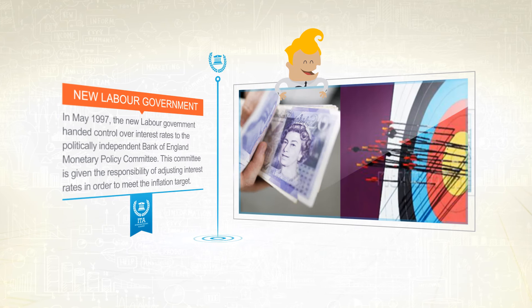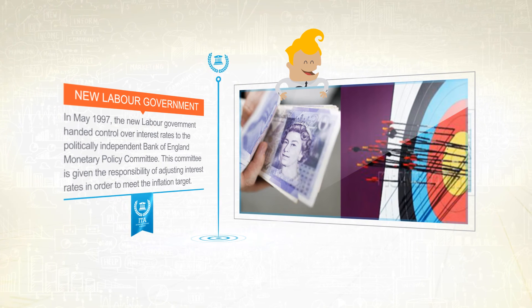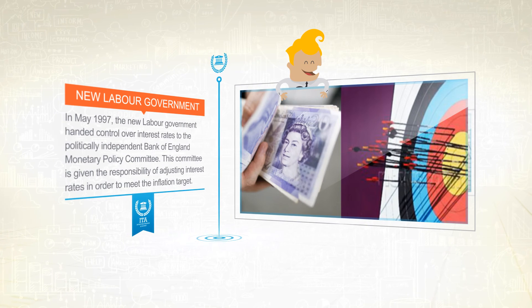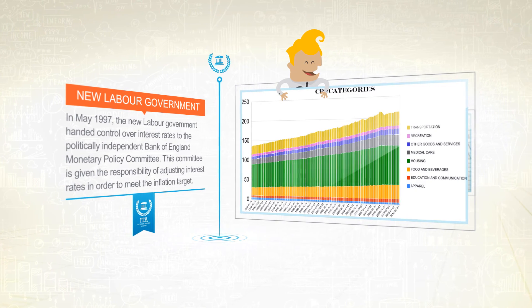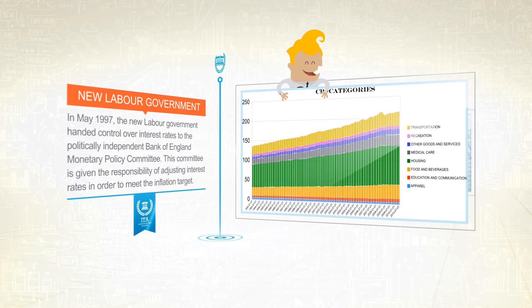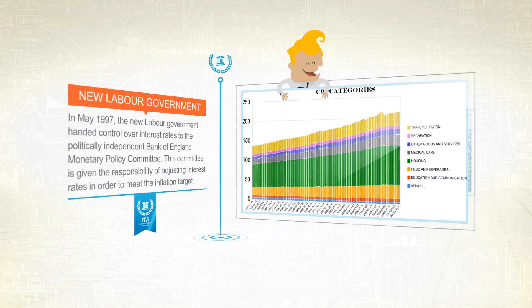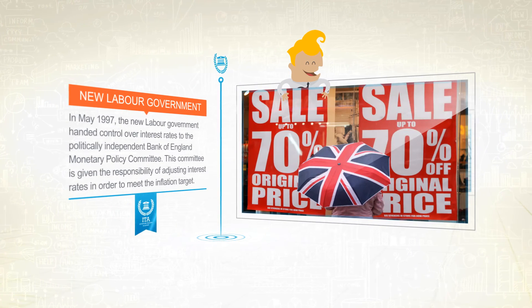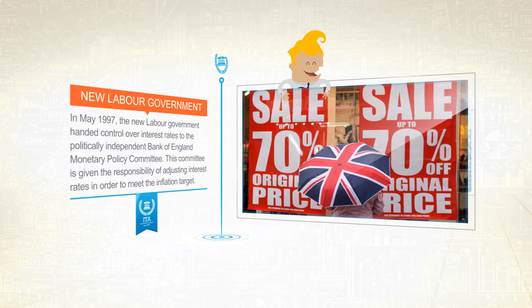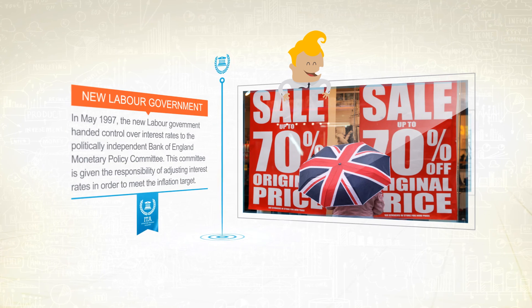Most modern countries set inflation targets at 2% each year, and the central bank strives to reach this target. The CPI calculates the average price increase as a percentage for a basket of 700 different goods and services. Around the middle of each month, it collects information on prices of these commodities from 120,000 different retailing outlets.